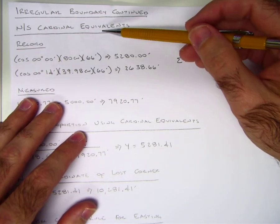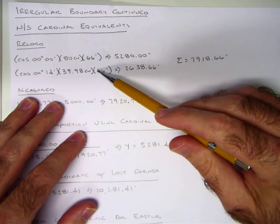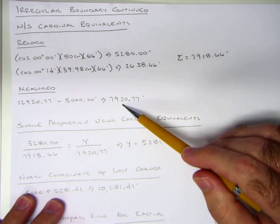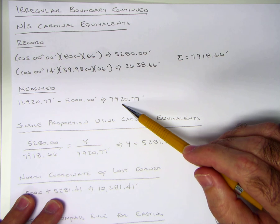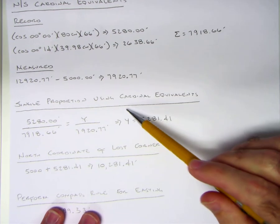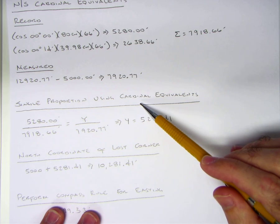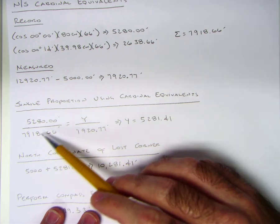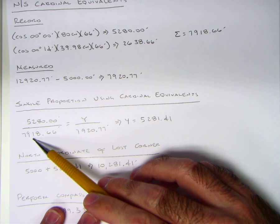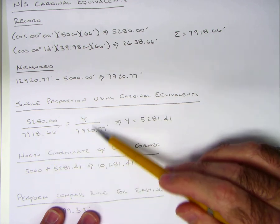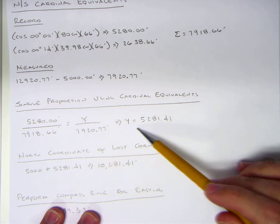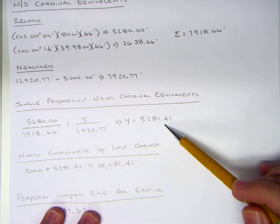The first thing I do is reduce the record to cardinal equivalents and that's what I've done here. Second thing I do is reduce the measure to cardinal equivalents, that's just the difference in the northings. Then I do a single proportion in a north south direction just using the cardinal equivalents. So 5280 is to 7918.66 as y is to 7920.77 and so you get y is 5281.41.